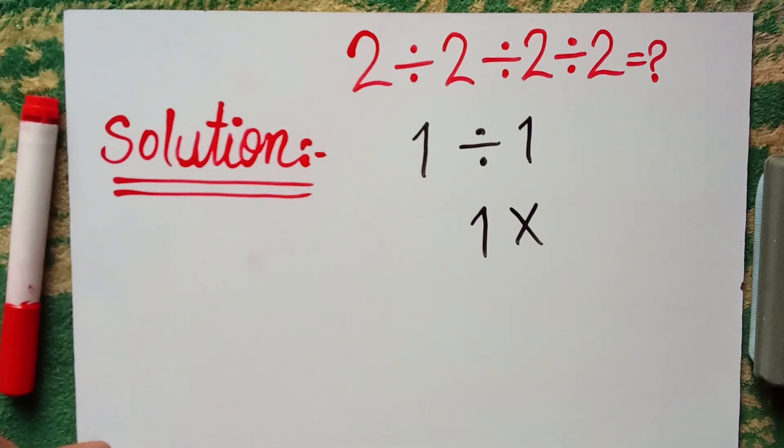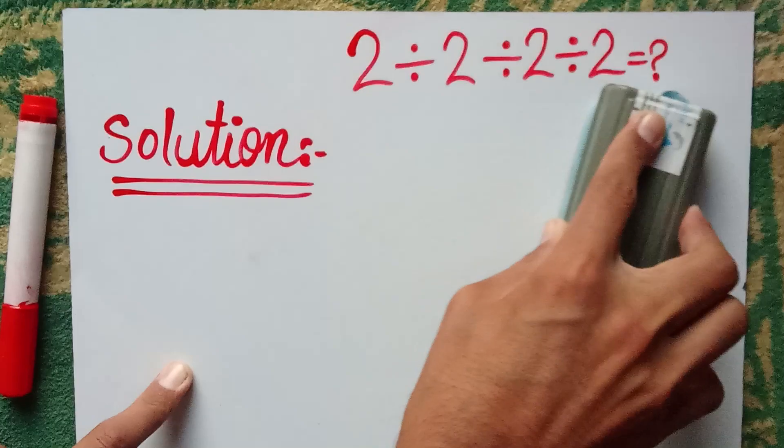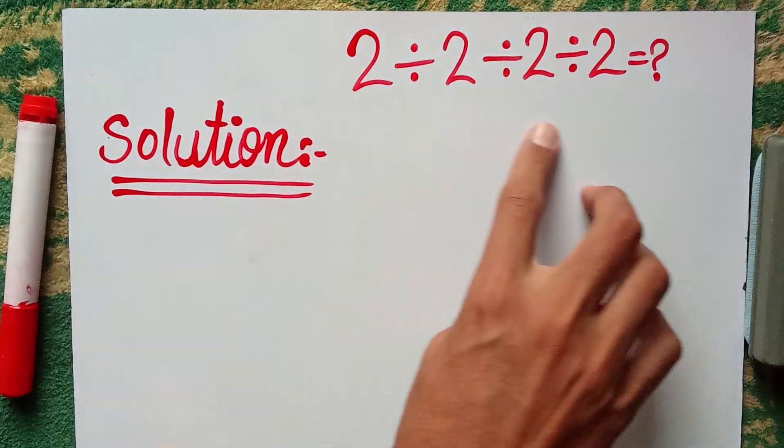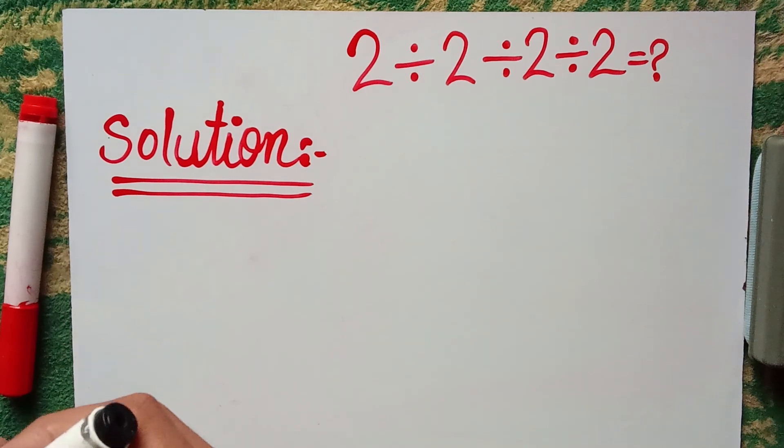Because the order of operation, which is called PEMDAS rule, which say that whenever in an expression there are more than one division, then we can solve it from left to right.